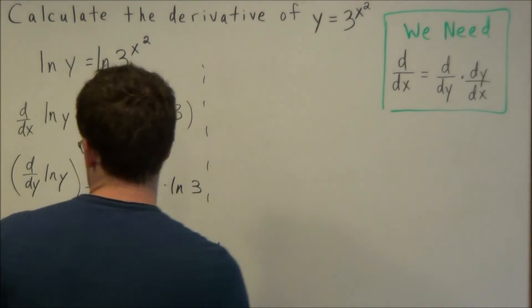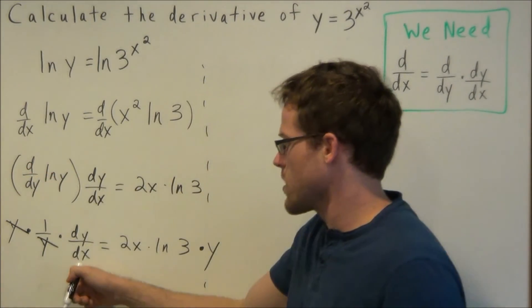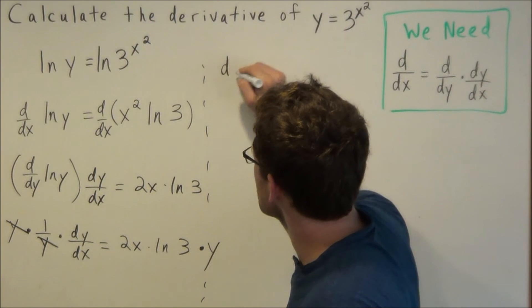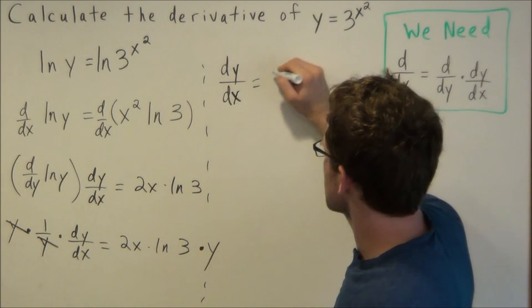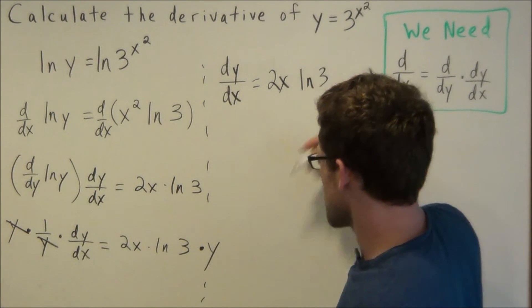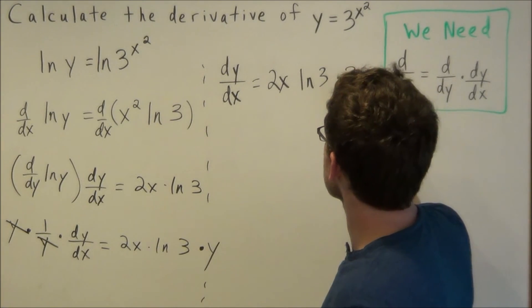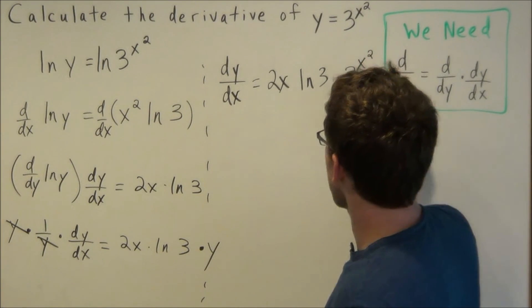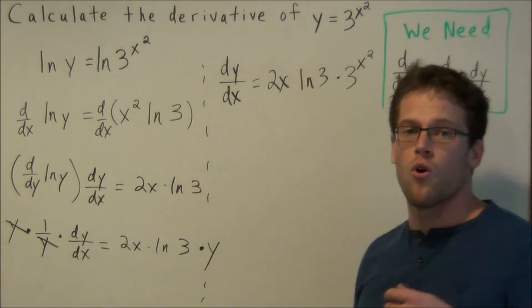And now notice on the left hand side, y divided by y cancels and we're left with just dy dx. So we have dy dx equals, and we have 2x times natural log of 3 times y. But y from the beginning is equal to 3 to the x squared power. Remember, we have to substitute at the end because our final answer needs to be all in terms of x.